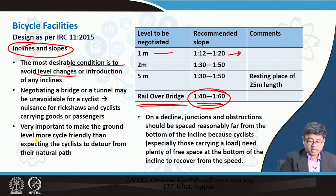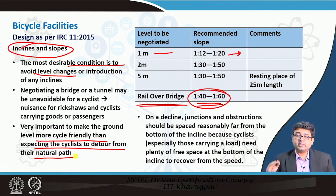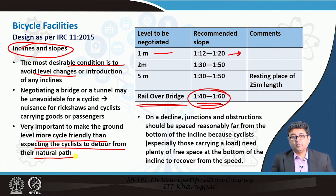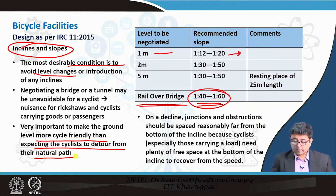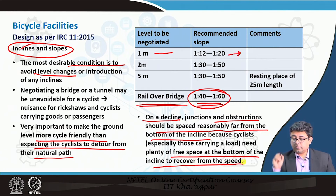Negotiating a bridge or tunnel may be unavoidable for cyclists, but implementing the recommended slopes helps them negotiate such steep inclines. It is very important to keep the ground level as cycle-friendly as possible rather than expecting cyclists to detour from their natural path. If the distance keeps increasing, cyclists will abandon this NMT mode and return to motorized vehicles. On a decline, junctions and obstructions should be spaced reasonably far from the bottom of the incline, as cyclists need plenty of free space to recover speed.